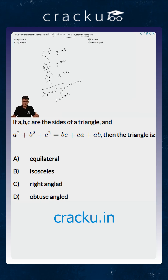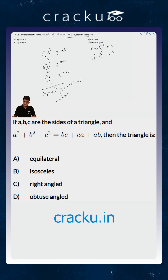Another way of looking at it is that for any two values a and b, (a - b)² is greater than or equal to 0. Similarly, (b - c)² is greater than or equal to 0, and (c - a)² is greater than or equal to 0.